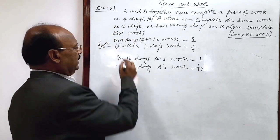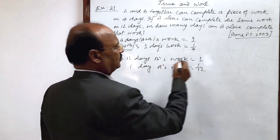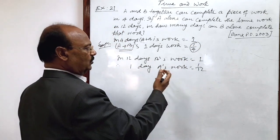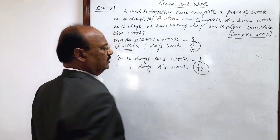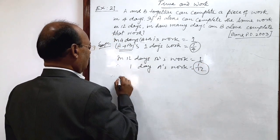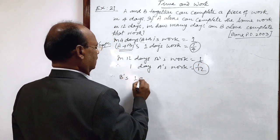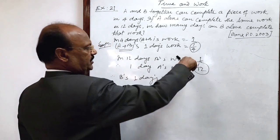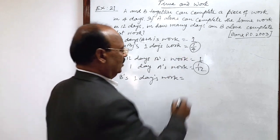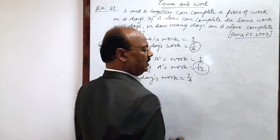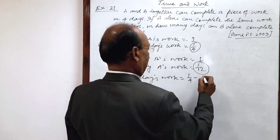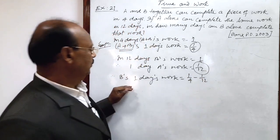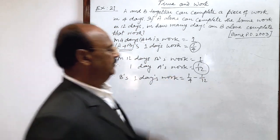So when A plus B both work together, then one day's work is one by four and one day's work is one by twelve. Therefore B's one day's work will be how much? By subtracting these two numbers we will get it. A plus B's one day work minus A's one day work is equal to B's one day work. Let us simplify it.